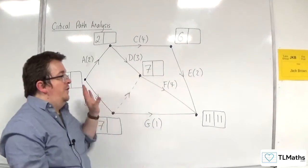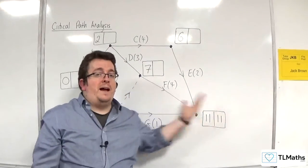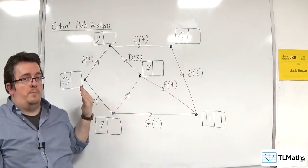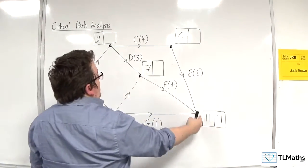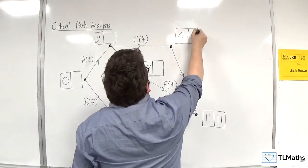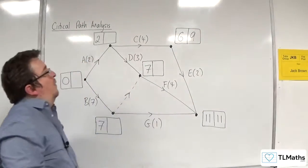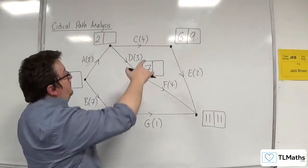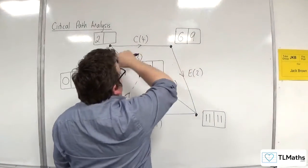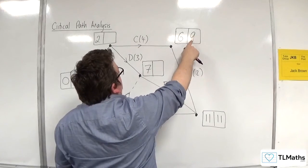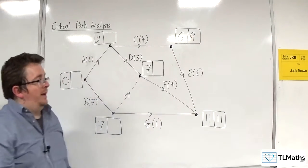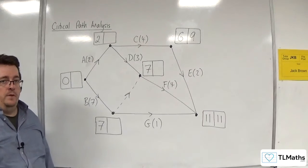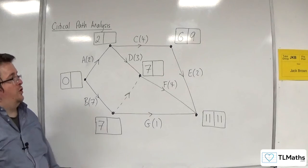So now I've done the forward pass. I'm now going to do the backward pass, filling in all the right-hand boxes. So we've got 11. Then take away two gets me to nine. So what that's telling me is that C could finish by nine at the latest in order for E to be completed in the time, without the whole project overrunning.